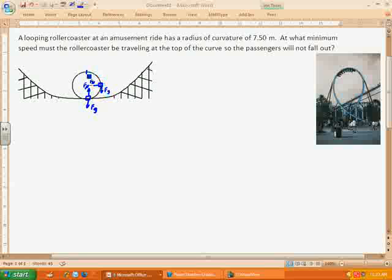Now when it gets to the top, you've got the force of gravity pulling down. Now if this is the absolute minimum where the passengers won't fall out, that means that the cart would just barely be on the track here. And so we're going to assume that the normal force at this point is minimal. It's negligible.